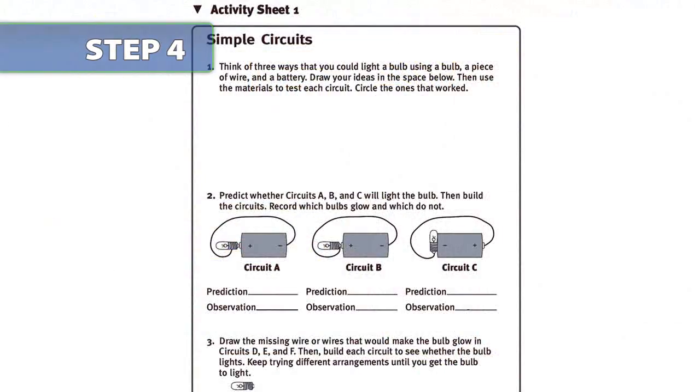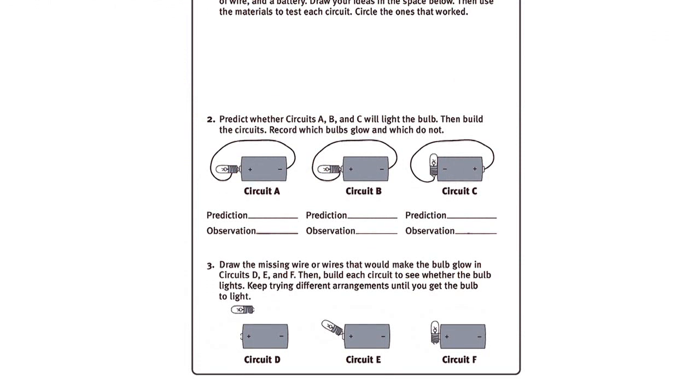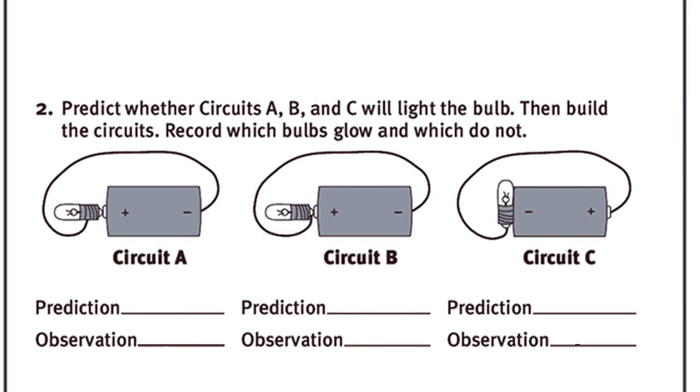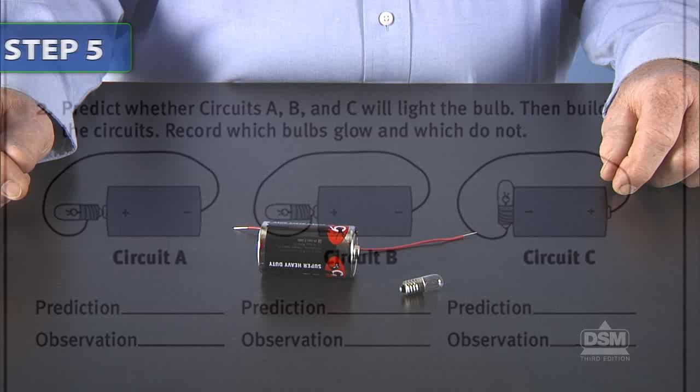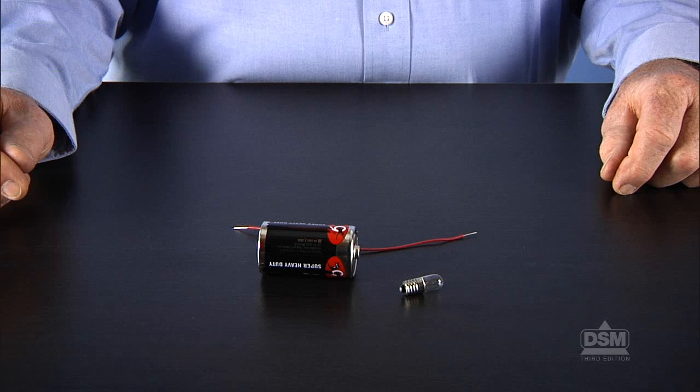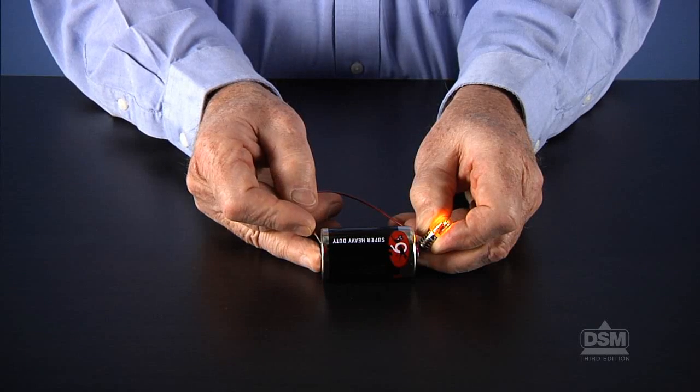Next, distribute activity sheet one and instruct students to draw three circuits that they predict will light the bulb on their activity sheet. Distribute the materials and tell students to build and test the arrangements they drew. Then circle which of the circuits caused the bulb to glow.